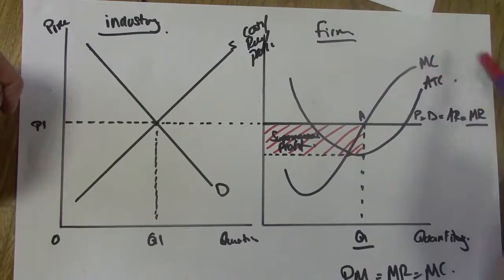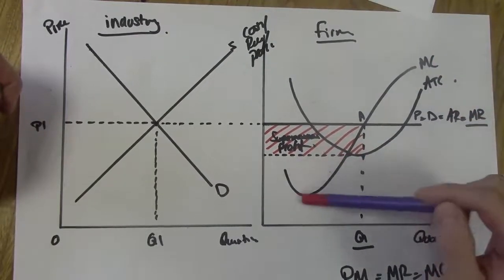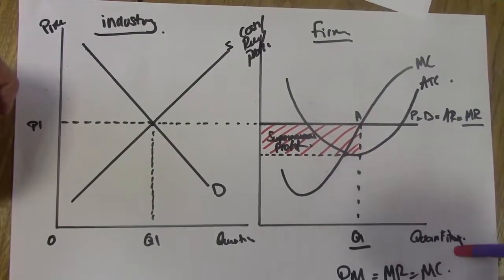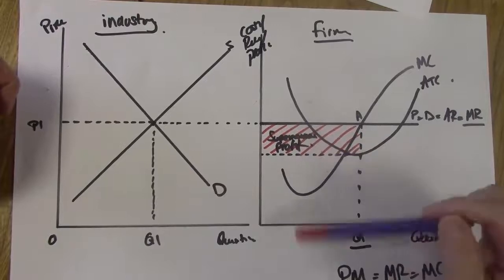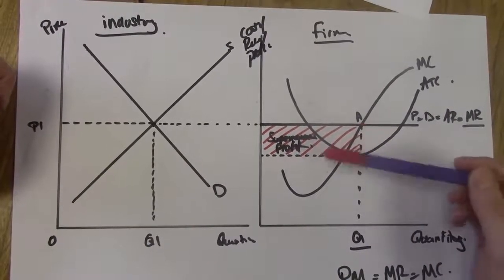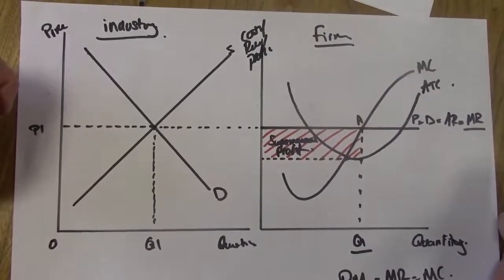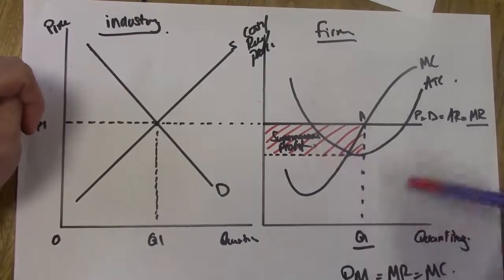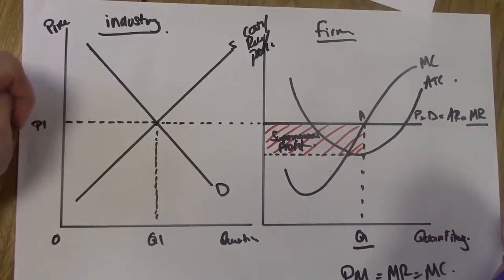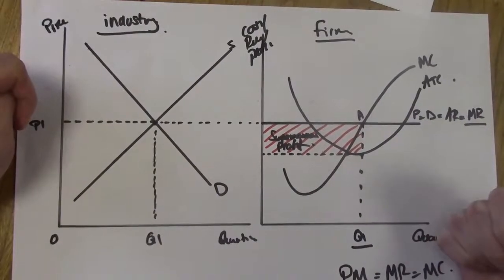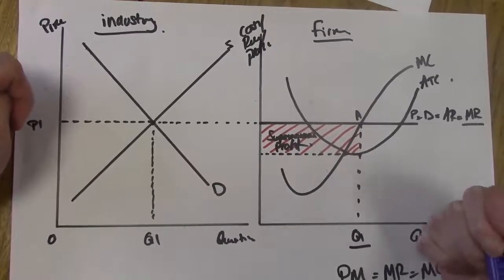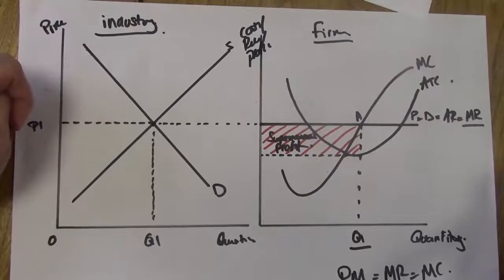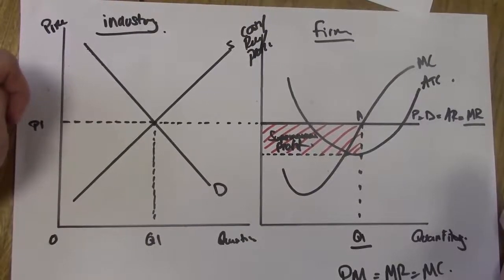MR equals MC is essential — you must show the profit maximizing level of output, so label both MC and MR clearly. Shade in the area of supernormal profit and label it properly, then reference it in your written response — for example: 'this firm makes a supernormal profit as shown in the diagram.' You could also reference how price is determined by the industry as illustrated in the left diagram. Use all your characteristics of perfect competition to form and develop your analysis.